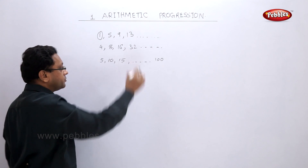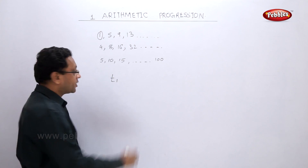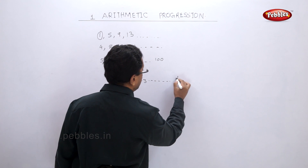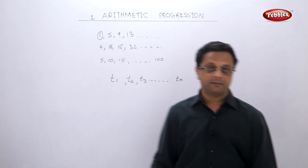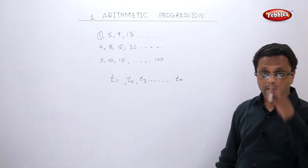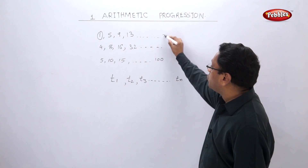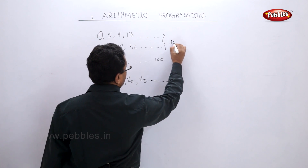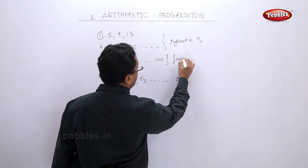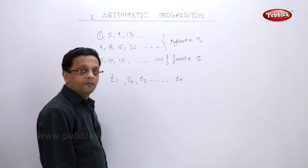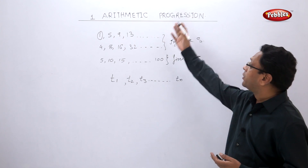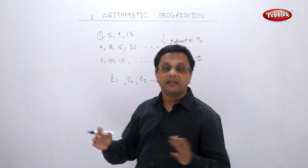Now, in a sequence, the first term is denoted by T1, the second term by T2, the third term by T3, and so on — up to the nth term. Also note that the first two sequences have no limit, so they are called infinite sequences, whereas the third sequence is limited, so it is called a finite sequence. Arithmetic Progression, which we are going to learn, is nothing but a special kind of sequence.